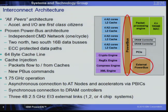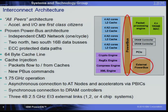This chip has roughly 1.4 billion transistors on it. With that many transistors and the amount of function integrated on this chip, this is one of the most complicated chips that IBM has developed.